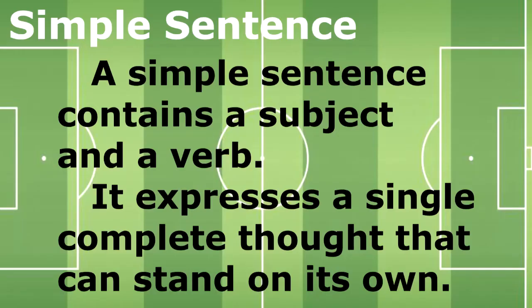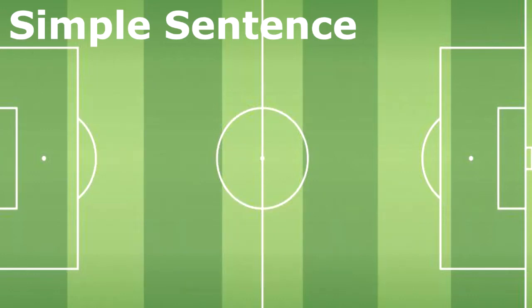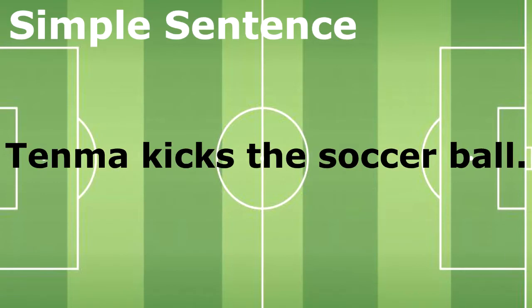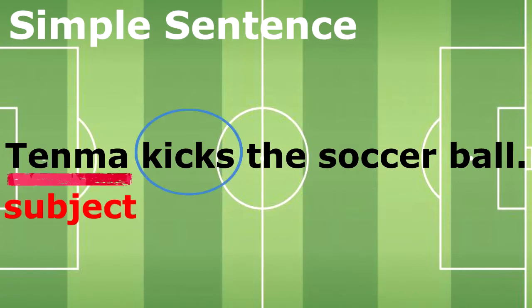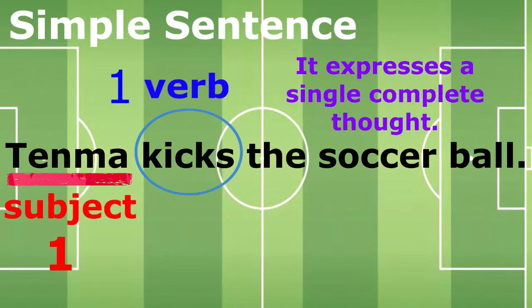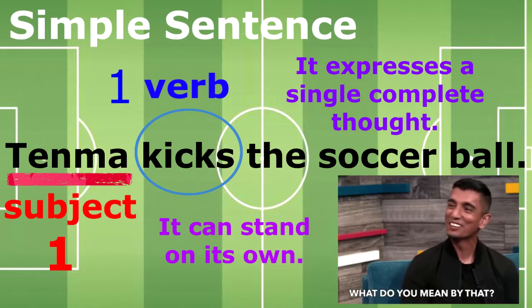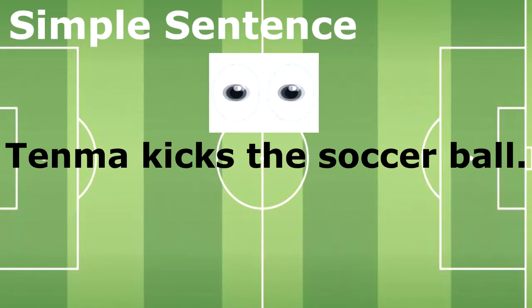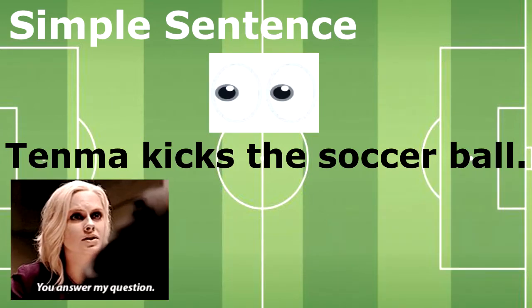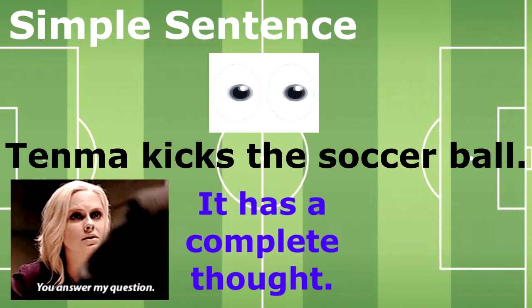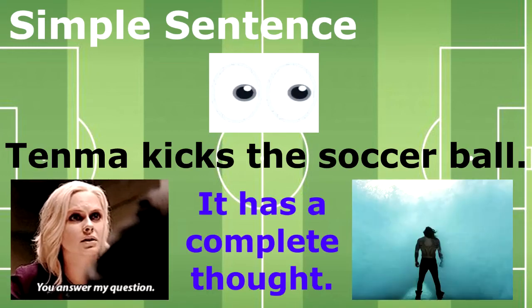A simple sentence contains a subject and a verb. It expresses a single complete thought that can stand on its own. Again, in the sentence 'Tenma kicks the soccer ball,' Tenma is the subject and kicks is the verb — one subject, one verb — and it expresses a single complete thought. It can stand on its own. If you read a sentence and it can answer your questions, then you can say that it has a complete thought and it can stand alone.